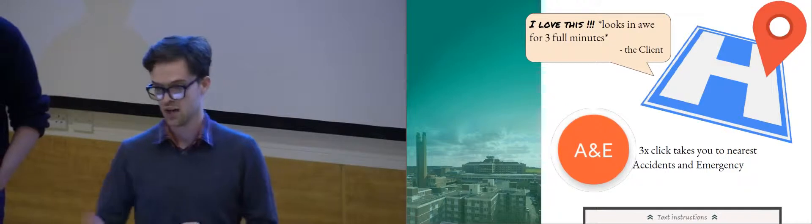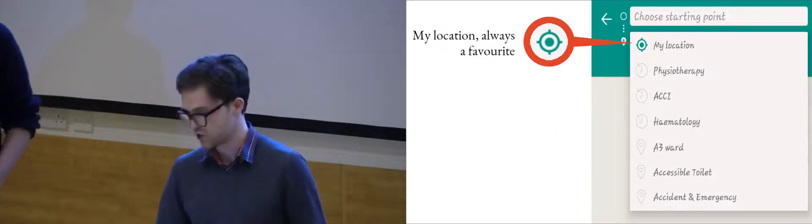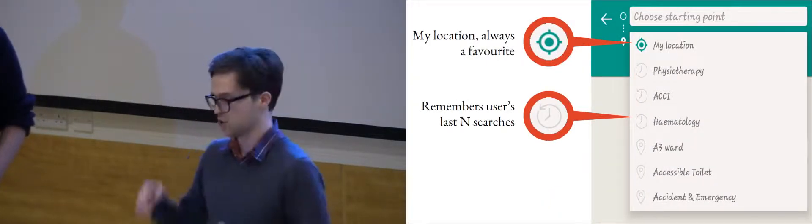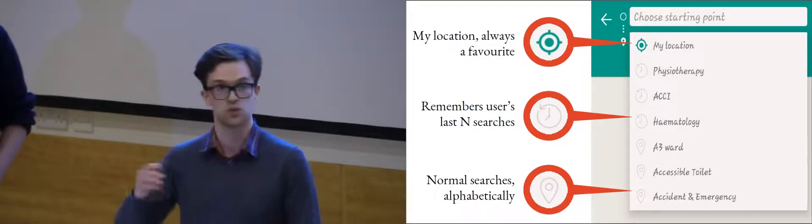Also, when you're searching, you have suggestions, but you also have your location. You have your most recent searches, and you can also search through things either by searching manually or scrolling through alphabetically.